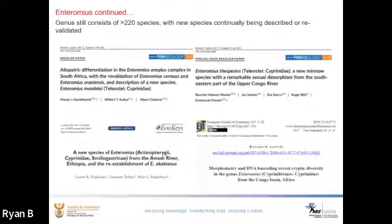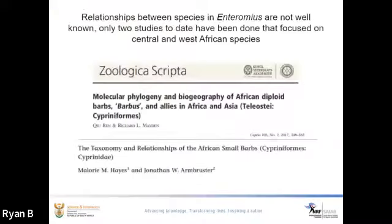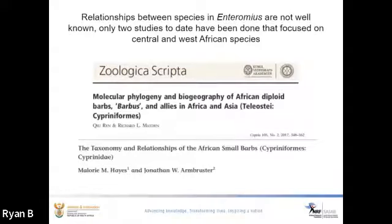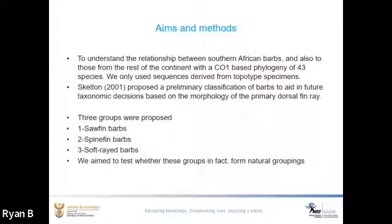This genus still consists of more than 220 species, with new species regularly being described or revalidated. The relationships between species in Enteromius are not well known, and only two studies have been done, which focused on central and west African species. Our main aim was to understand the relationship between southern African barbs and also those from the rest of the continent, with a CO1-based phylogeny of 43 species.